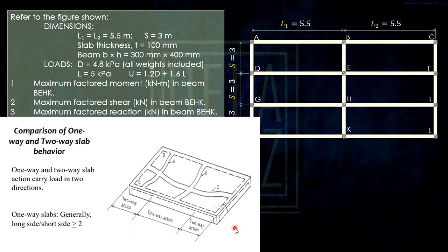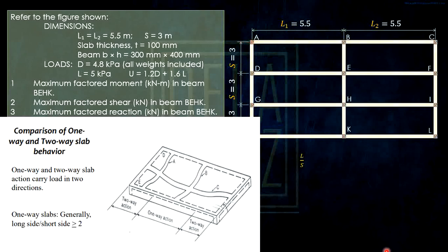From the ASIP notes, this is the rule of thumb: the ratio of the long span over the short span. One-way and two-way slab action carries load in two directions. Generally, a one-way slab has the ratio of the long side to the short side greater than or equal to 2. Otherwise, it should be considered a two-way slab. If we take the ratio: 5.5 over 3 equals 1.83, so using this rule of thumb, it should be taken as a two-way slab.